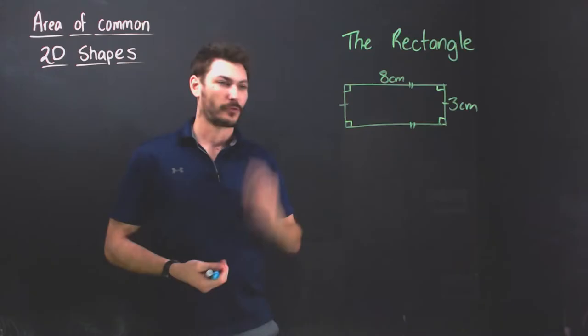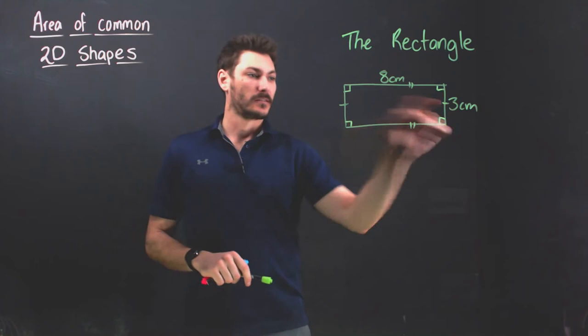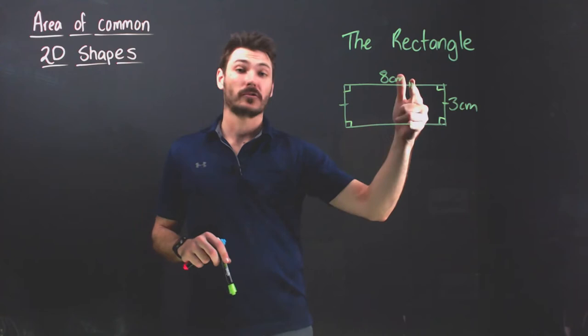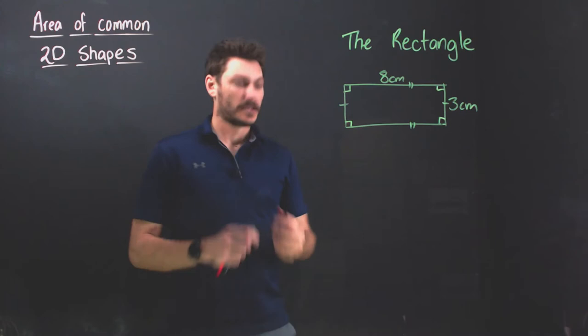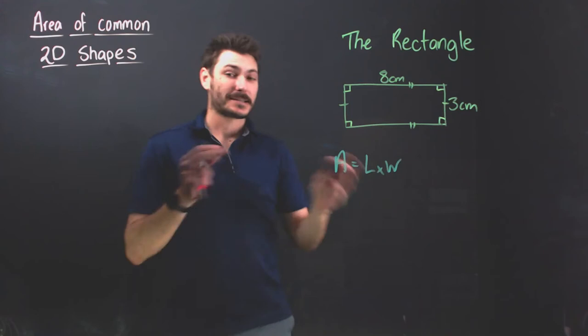The first shape is the rectangle which is defined by having opposite sides which are equal in length, denoted by these dashes here, and all angles in this quadrilateral are 90 degrees. The formula for area of a rectangle is the length times the width, so A equals L times W. It doesn't matter which one's which.